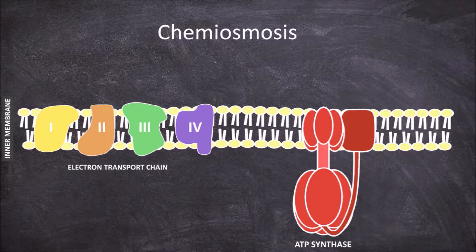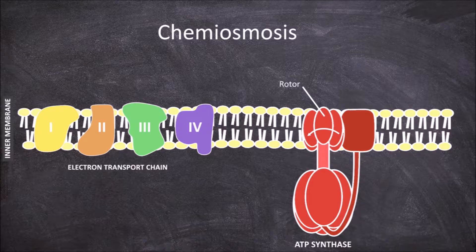ATP synthase is a rotating molecular motor consisting of a F0 subunit which consists of the rotating rotor that sits in the inner mitochondrial membrane and the stator which is anchored in the inner mitochondrial membrane.